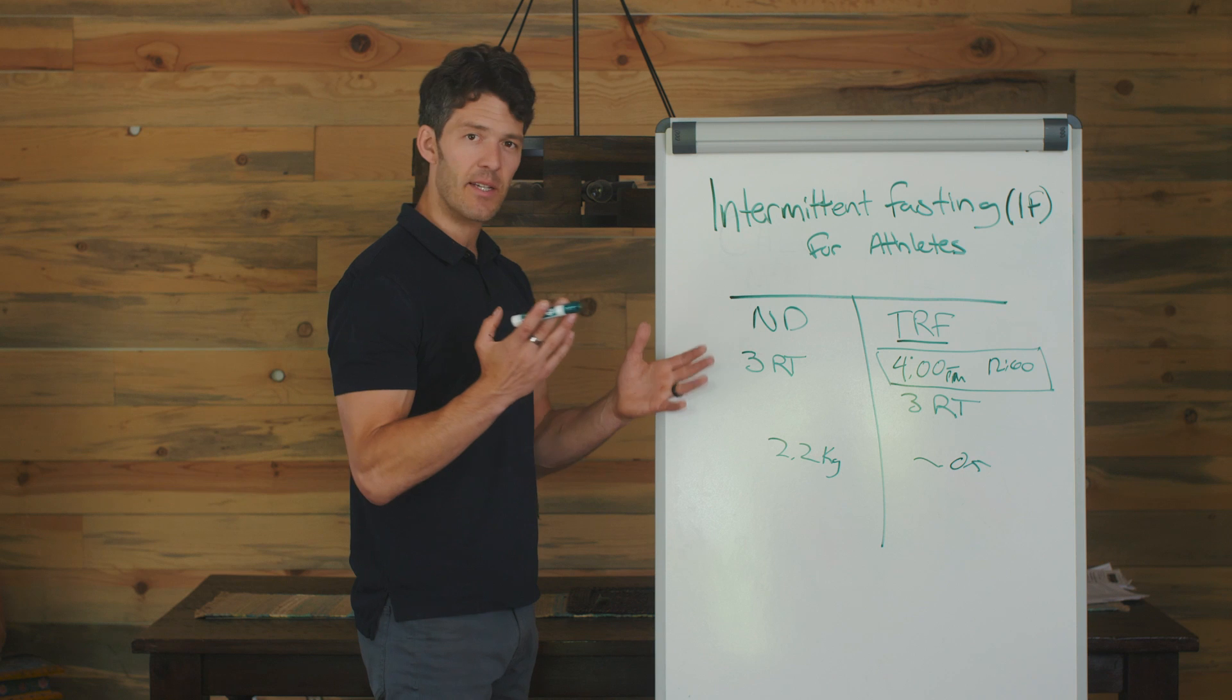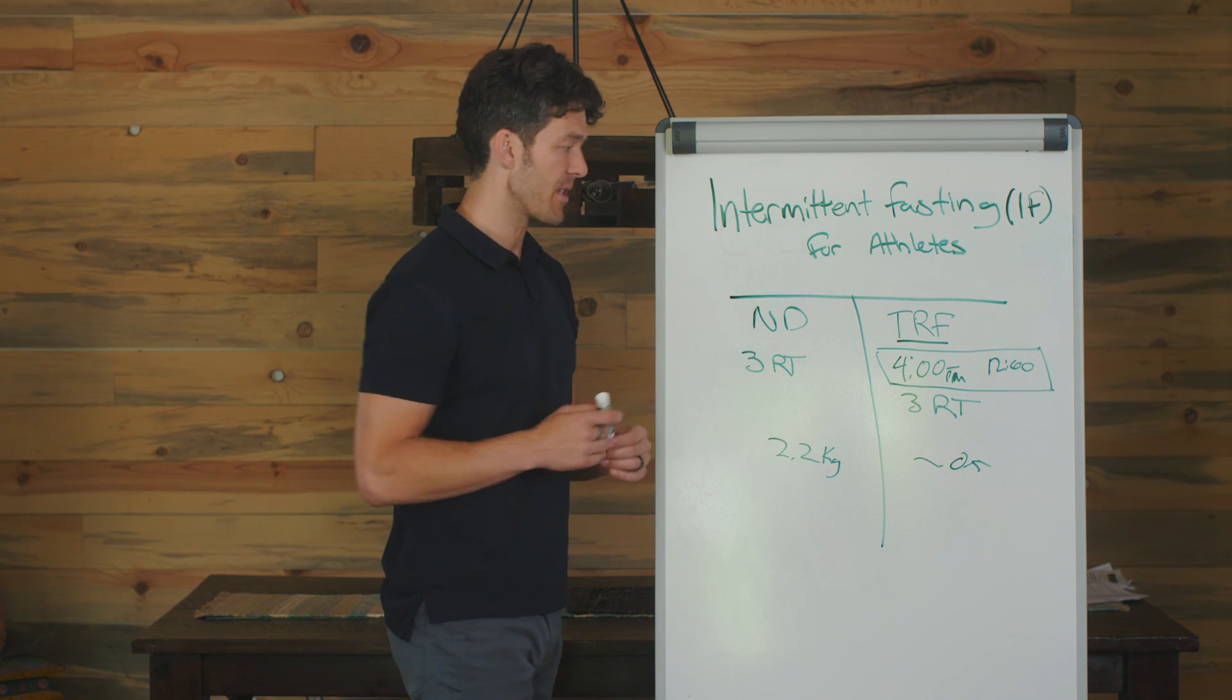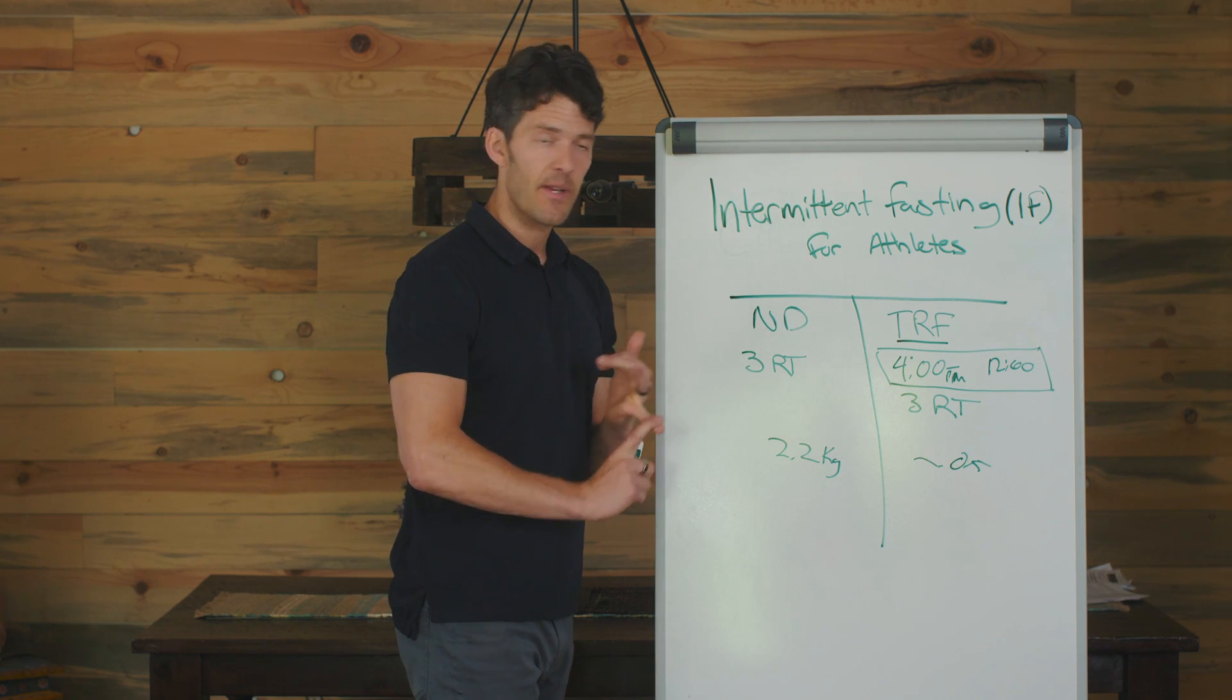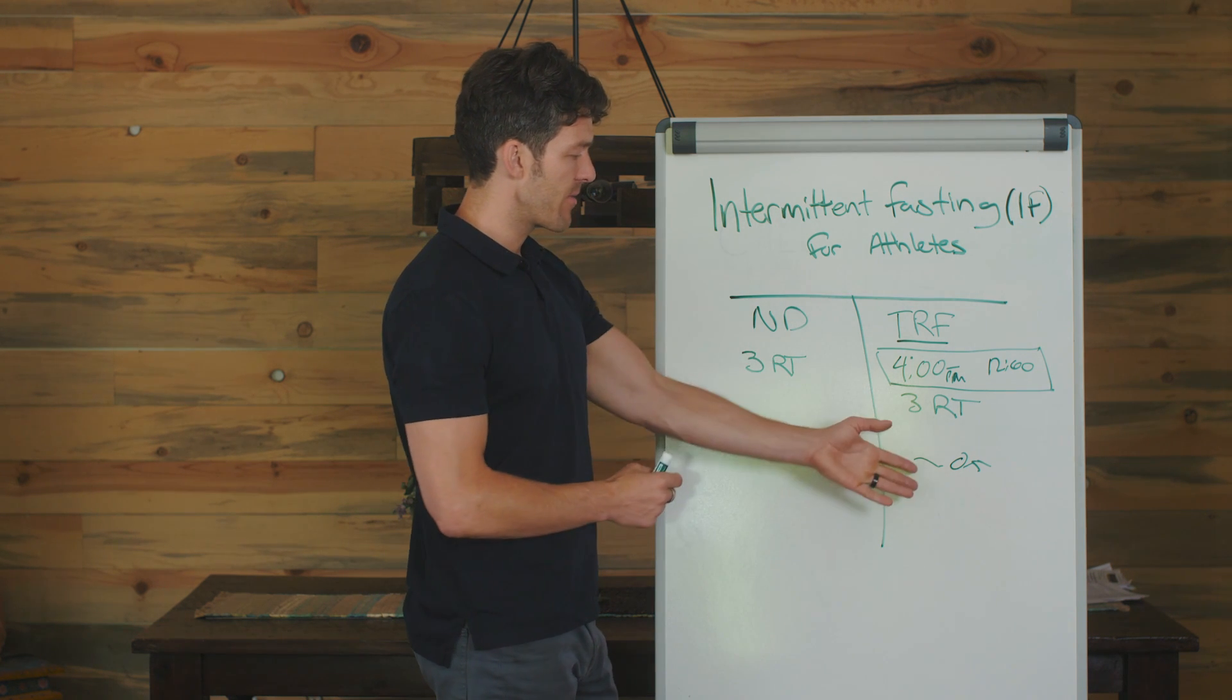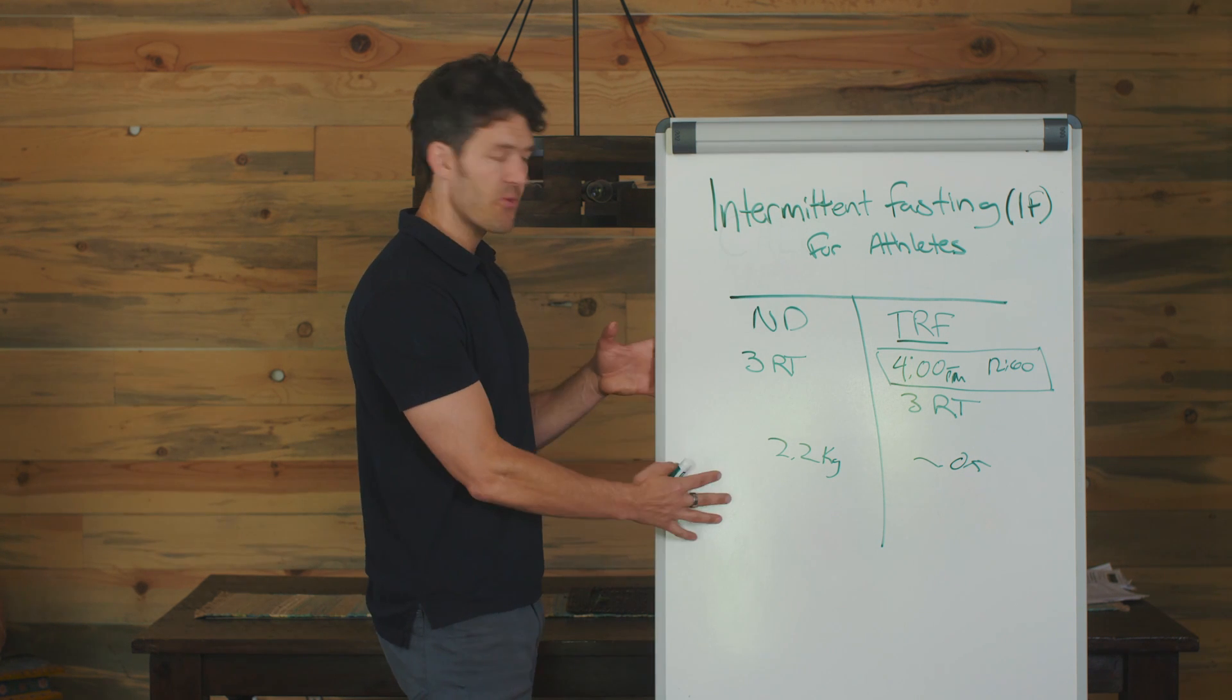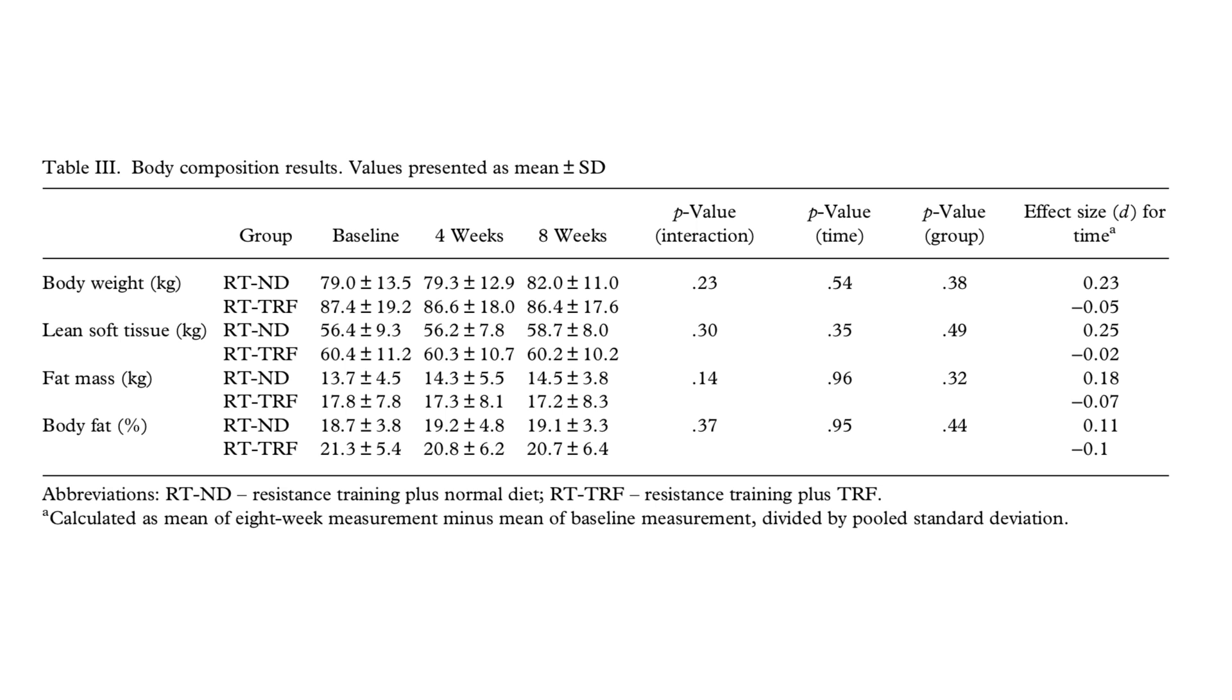Out of the 28 subjects that started, 18 finished. So there was quite a few college kids that did drop out. But it's definitely doable. Strength increased, and their body weight didn't change that much. But this group had unrestricted feeding. So they were eating whenever they want, however they want. There was no fasting protocol built in whatsoever.